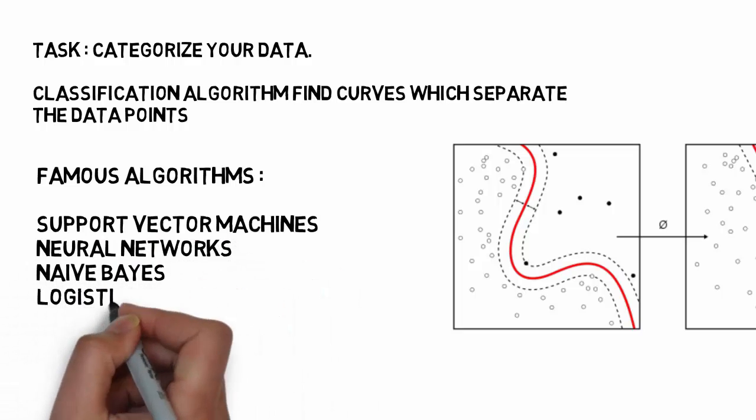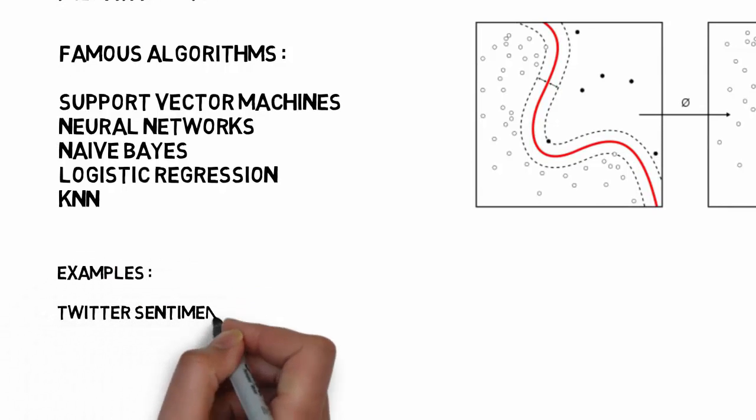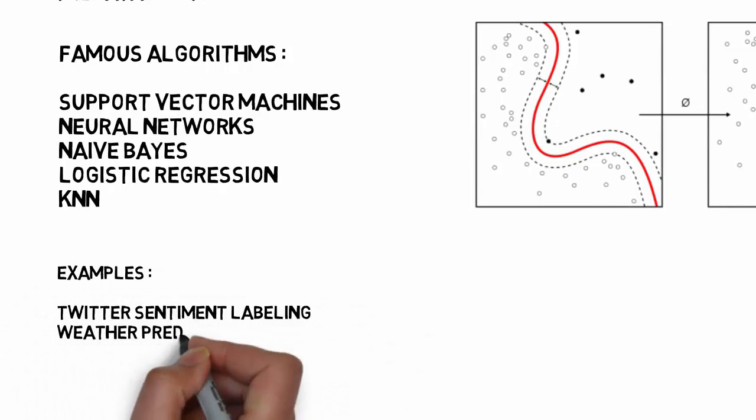Some famous classification algorithms that can be used are support vector machines, neural networks, naive Bayes classifiers, logistic regression, and KNN, the K nearest neighbor algorithm.